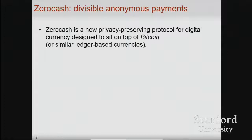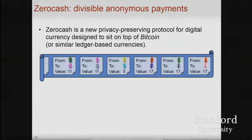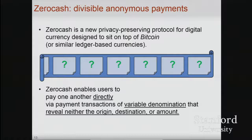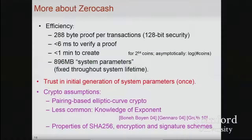Zerocash is a privacy-preserving protocol providing all the functionality of Bitcoin. If you look at the blockchain, what you see is a bunch of meaningless values — random numbers, ciphertexts, and zero-knowledge proofs that reveal nothing. A third party knows nothing about who paid whom and how much in every individual transaction. Only those involved know the details, and they know it's legitimate. The system is practical: proofs are a few hundred bytes long, take a few milliseconds to verify and less than a minute on a typical computer to create.